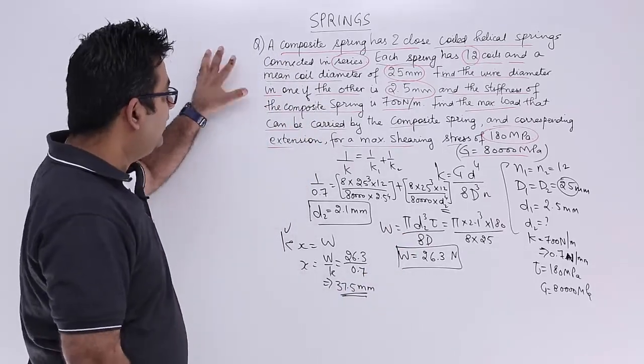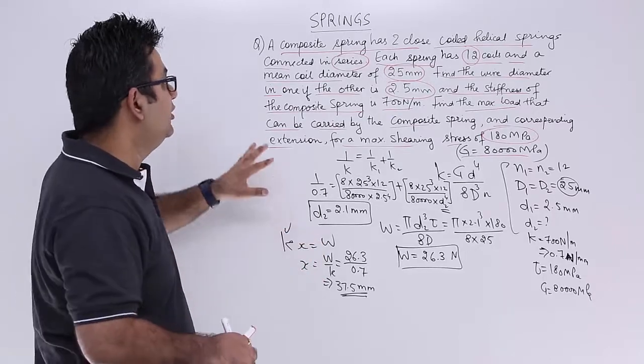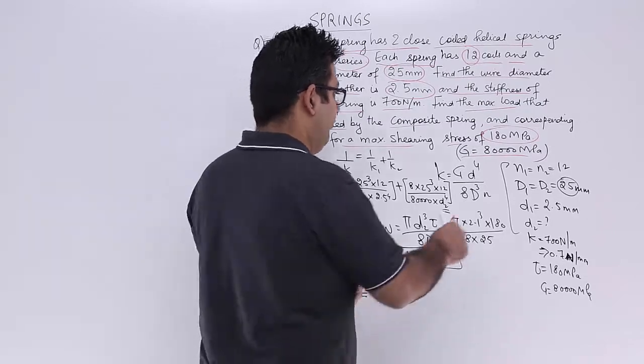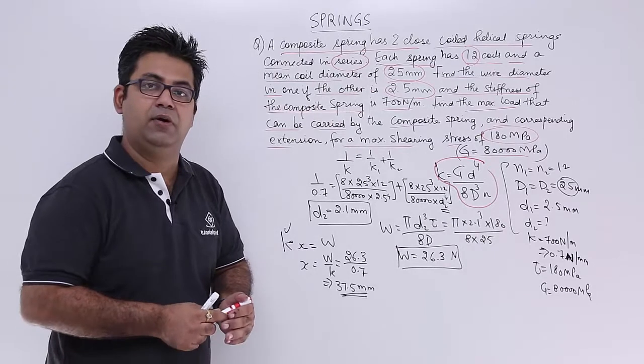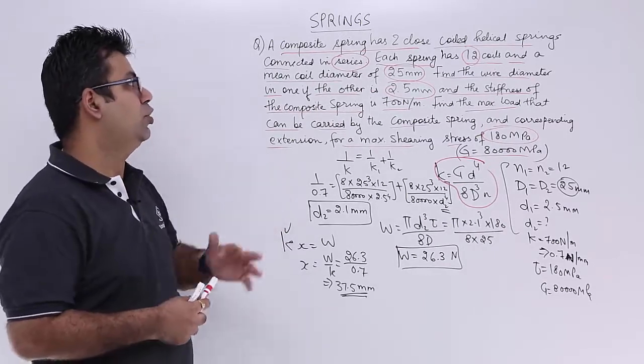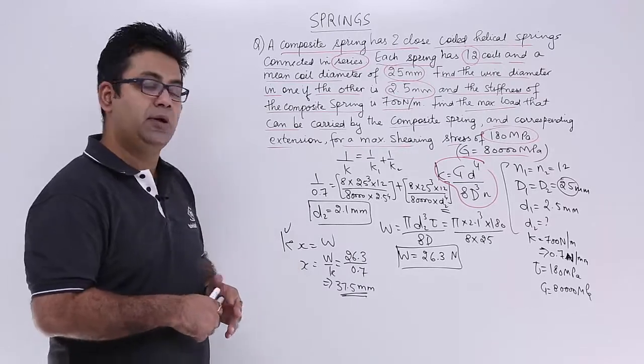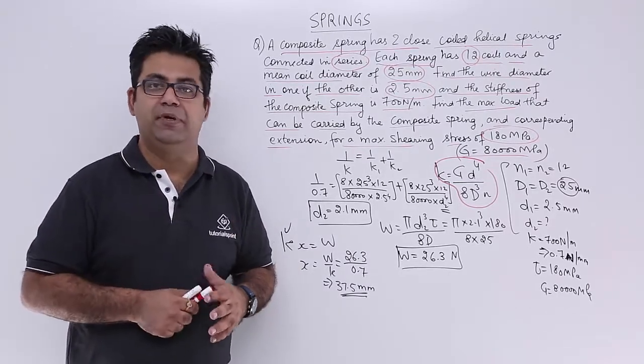So this is how you actually look at the data which is given to you. It is a combination of the spring combination topic and the formula that we derived in the very first video when we introduced the closed coiled helical spring to you. So I hope you understood this question. Now let's move on to the next video and talk about leaf springs. Thanks.